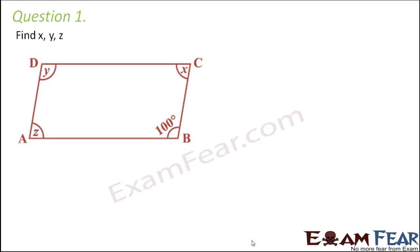Question number one: find x, y, and z. Here we have a parallelogram where only one angle is given and all others we need to find out. Yes, of course we'll be able to find them, because we know certain properties of parallelogram.